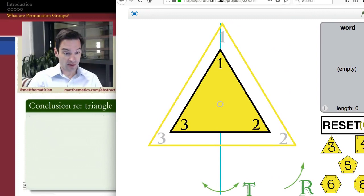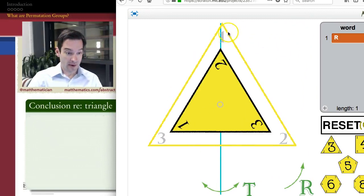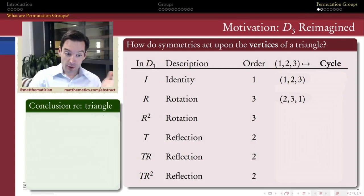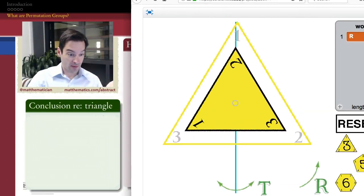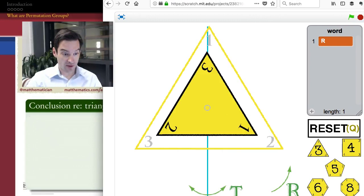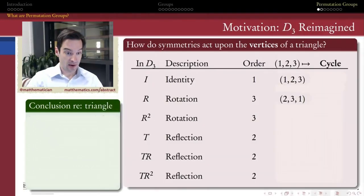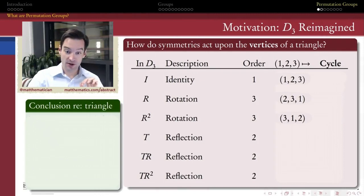If I then apply a rotation, then I would write down two, three, and one as the vertices occupying those positions. And if I run through the rest of the symmetries of this triangle, so r squared would be rotating this one more time, there I would list three, one, and two as the notation for that one.